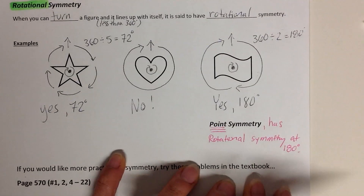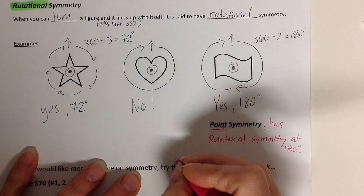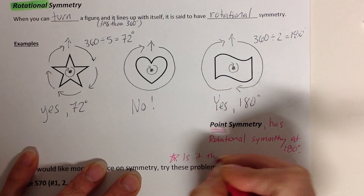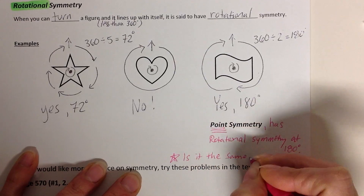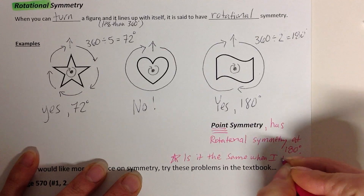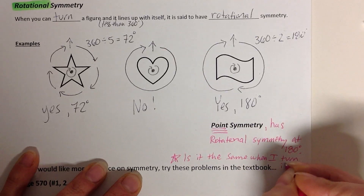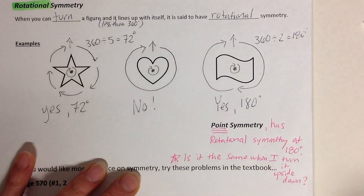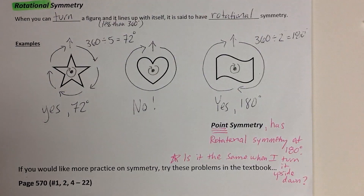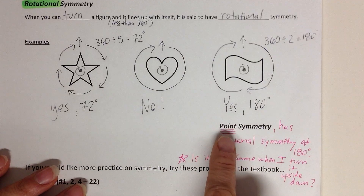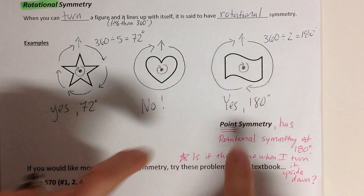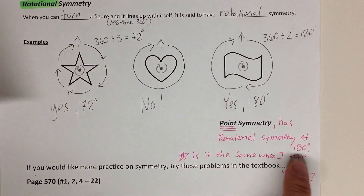So what does that mean specifically? It means if I take something and turn it upside down, is it the same? Is it the same when I turn it upside down? If yes, then it has point symmetry. So let's look at all these shapes up here at the top. Point symmetry means I'm going to rotate about a point — it's rotational symmetry — and 180 degrees is upside down.